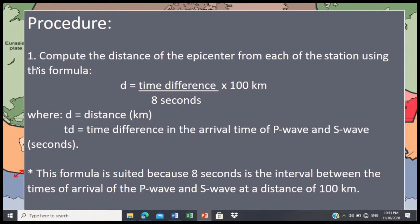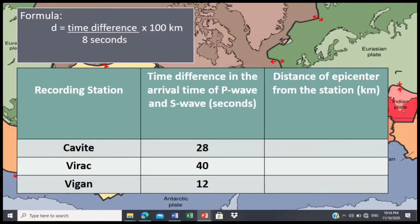First, compute the distance of the epicenter from each of the stations using this formula: d equals time difference divided by 8 seconds times 100 kilometers, where d is distance in kilometers, and td is time difference in the arrival time of P-wave and S-wave in seconds. This formula is suited because 8 seconds is the interval between the times of arrival of the P-wave and S-wave at a distance of 100 kilometers. Now let's compute using this formula.